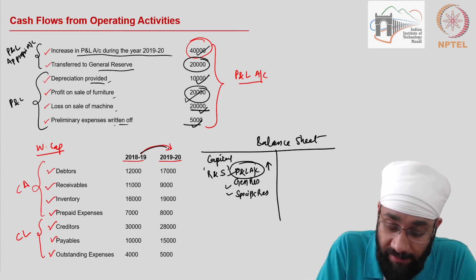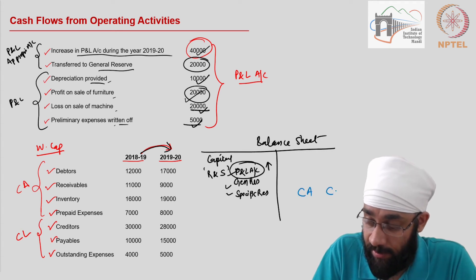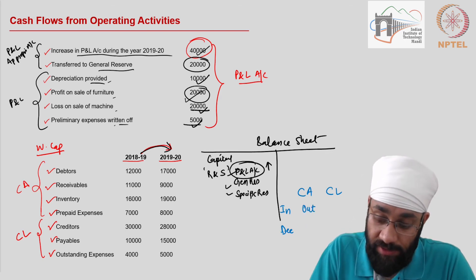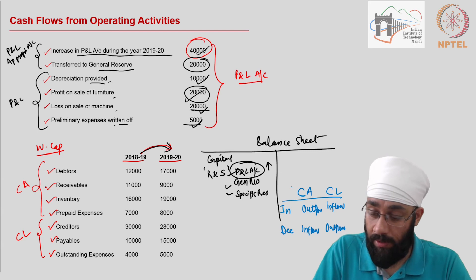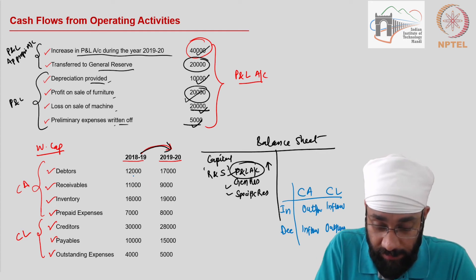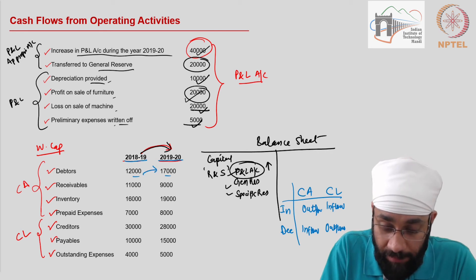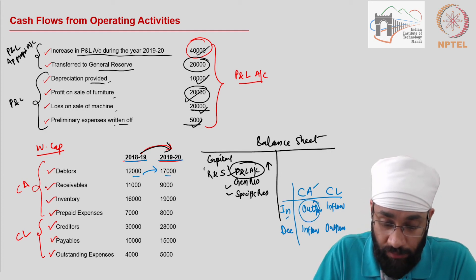Now there are other items not present in the profit and loss account that we must consider — the working capital changes. I need to recall the rules: if current assets go up, that is an outflow; if current assets decrease, that is an inflow. The opposite is true for current liabilities. I have drawn a table on the side and will mechanically apply this rule to each account variance. Debtors went from 2018-19 to 2019-20 — they are going up.